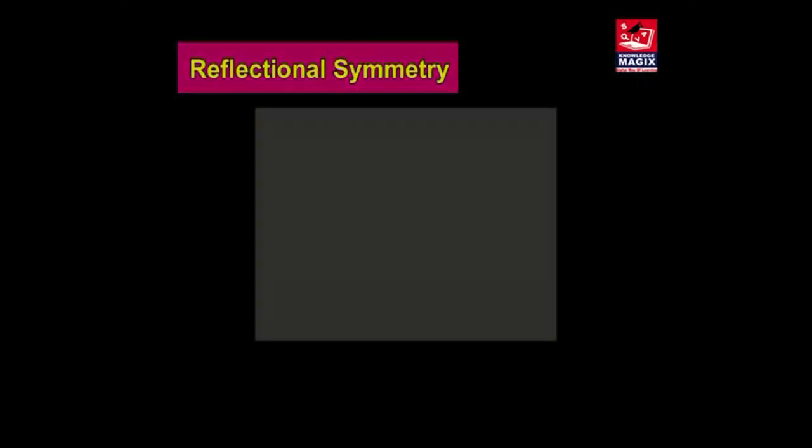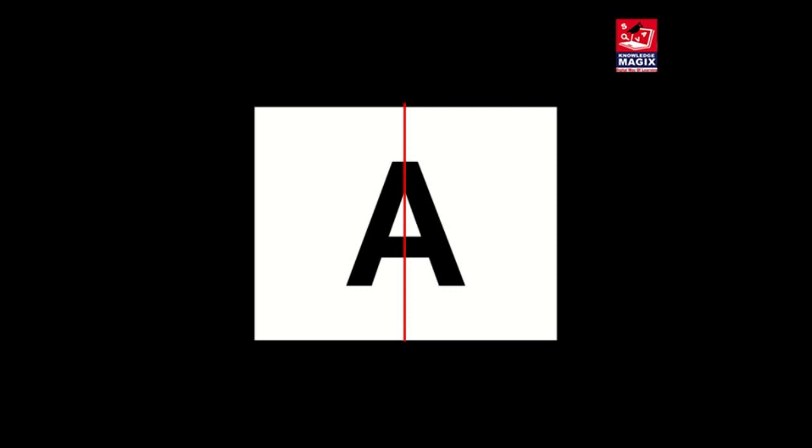Let's understand what is meant by Reflectional Symmetry. First, write the English capital letter A. Fold the paper so that the two parts fall exactly on each other. Mark with dots the line which makes two equal parts of the figure. This line is the axis of symmetry of the figure.